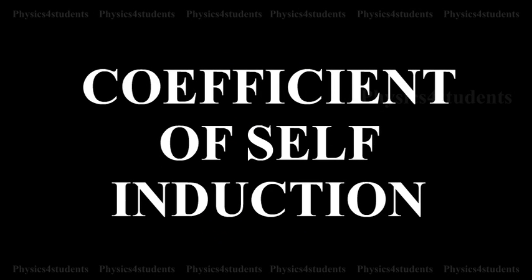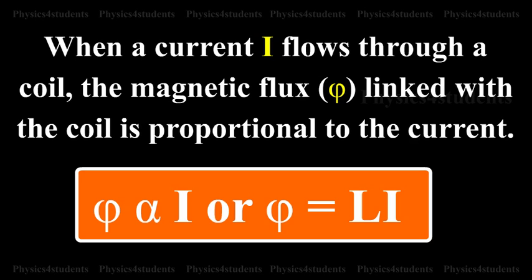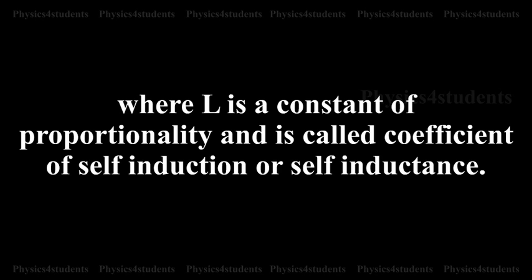Coefficient of self-induction. When a current I flows through a coil, the magnetic flux phi linked with the coil is proportional to the current. Phi is directly proportional to I or phi equals L I, where L is a constant of proportionality and is called coefficient of self-induction or self-inductance.